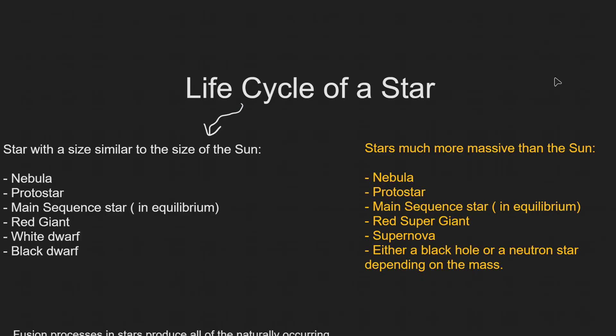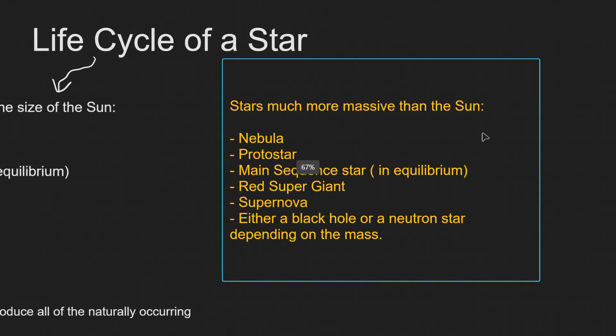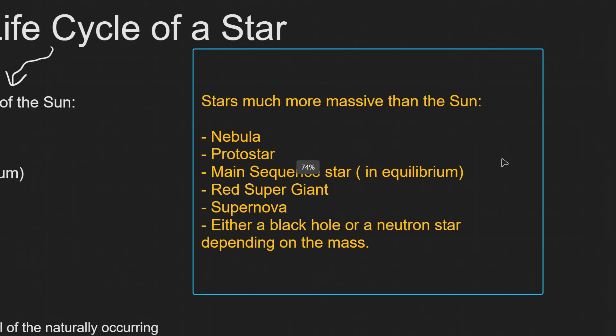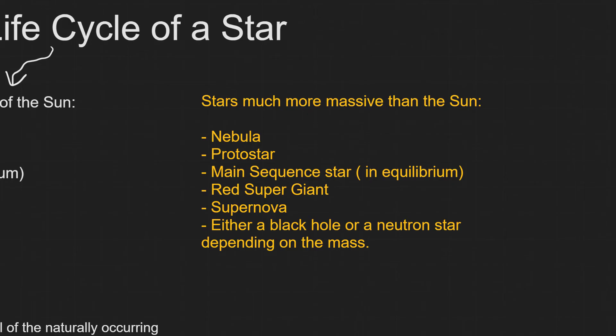Stars which are much more massive than the sun will follow a similar path. From a main sequence star, they're going to turn into a red supergiant, and then afterwards a supernova explosion will take place. The star will then either turn into a black hole or a neutron star depending on the mass.